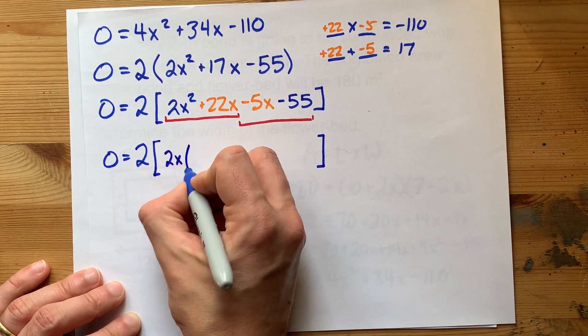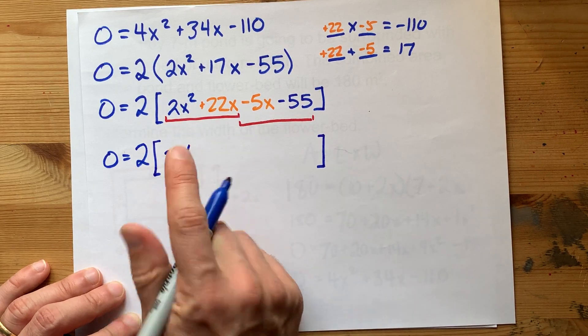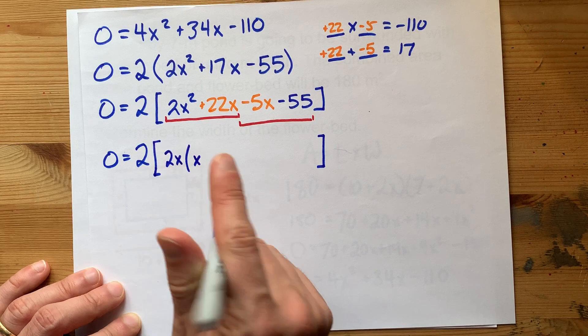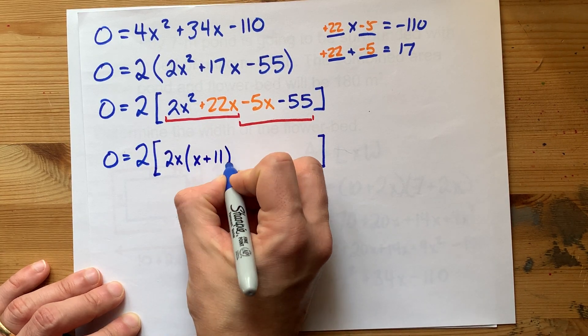What's common between both these two terms is a 2 and an x. You can divide both of them by 2 and there's an x in both. 2x squared without 2x is x. 22x without 2x is plus 11. I'm dividing.